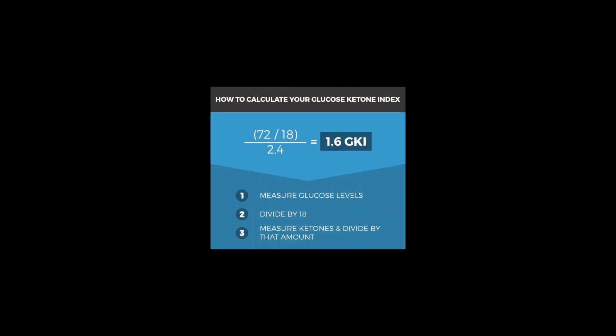To calculate your glucose ketone index, take your blood glucose number divided by 18, and then take that number and divide it by your ketone levels. The answer you get is your GKI.